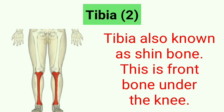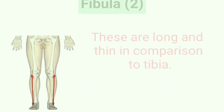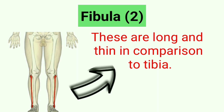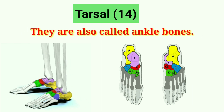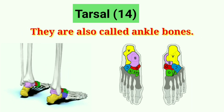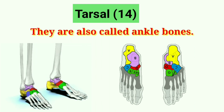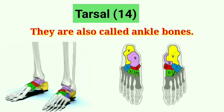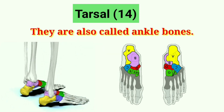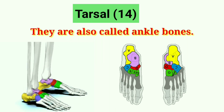Tibia — these are the shin bones. Fibula — these are long slender bones on the inner side of the lower leg. Tarsals — also called ankle bones; their quantity in our body is 14. These are the ankle bones that make up the heel and upper half of the foot.